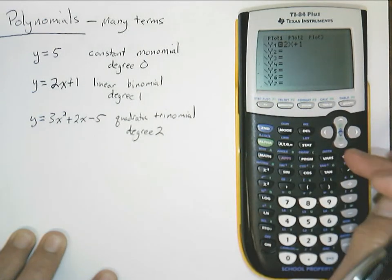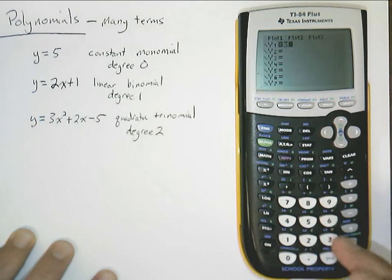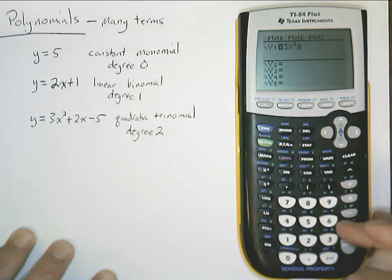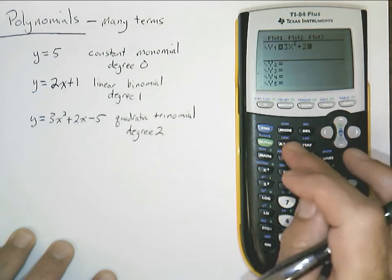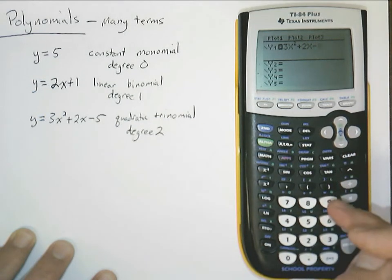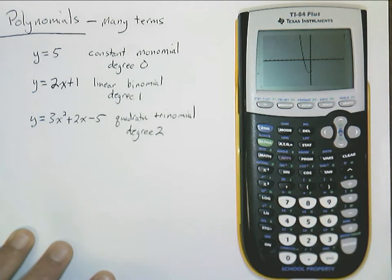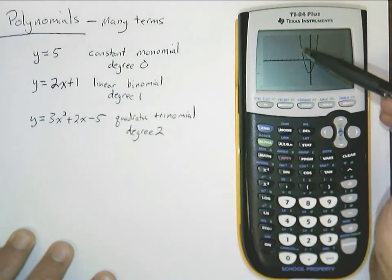And of course, quadratics. We know what these look like. Let's see here. 3 times x squared plus 2 times x minus 5. Let's graph that one. And there we see the standard parabola shape.